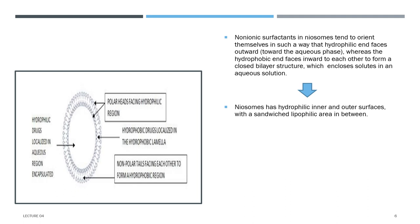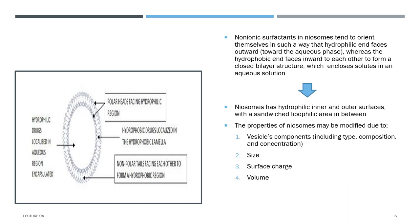To form a closed bilayer structure, energy such as heat or physical aggregation is required. Various forces inside the vesicles play an important role in maintaining the vesicular structure, for example van der Waals forces and repulsive forces among surface molecules. Varying vesicle components — including type, composition, concentration, size, shape, surface charge, and volume — will likely modify the properties of the resulting neosomes.